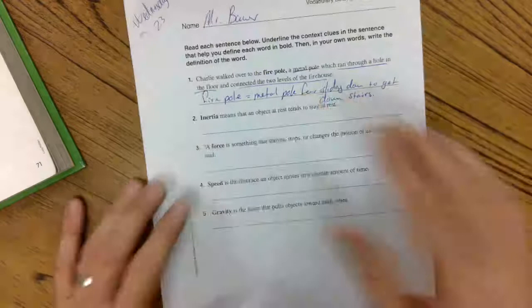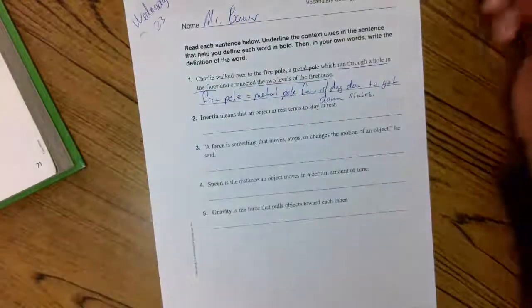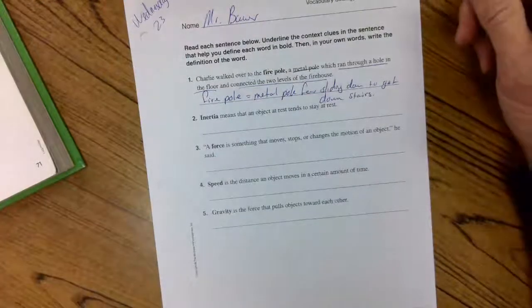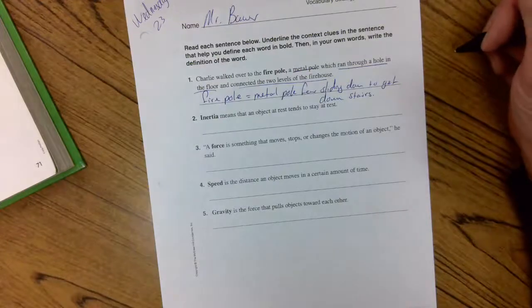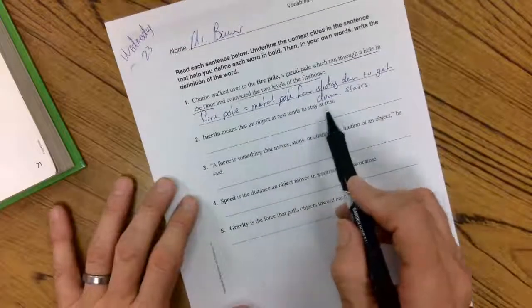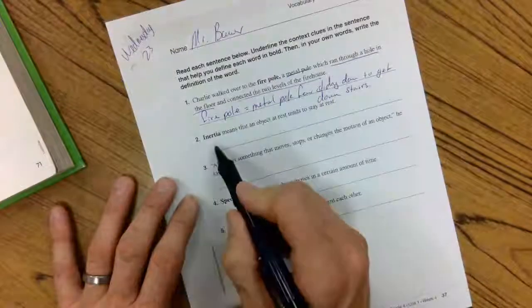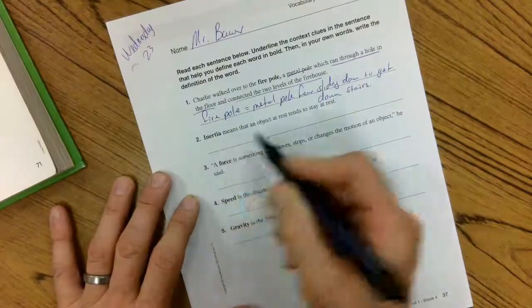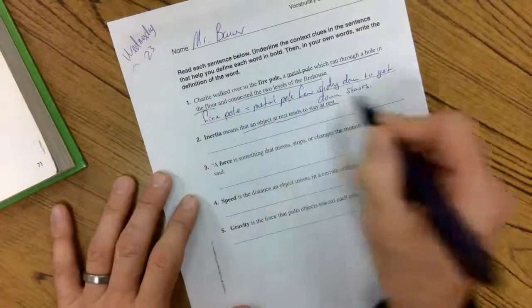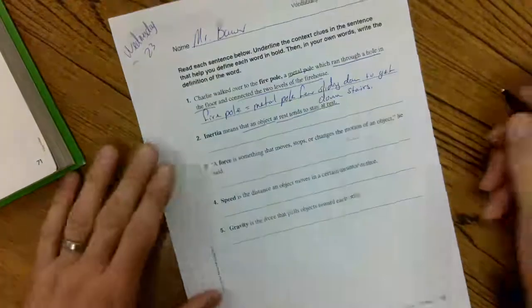So I use the context clues to come up with my definition. Your definition does not have to be the same as mine. All right. Inertia means that an object at rest tends to stay at rest. Inertia means, that's like equals, object at rest stays at rest.